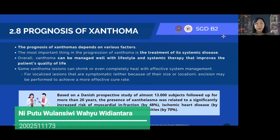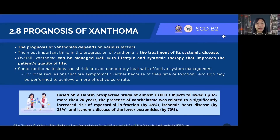Hello everyone. My name is Tipu Talansiwedantara, with my last three digit number being 173. In this session, I will explain about the prognosis of Xanthoma. The prognosis of Xanthoma depends on various factors. When trying to cure Xanthoma, the most important thing is the treatment of its systemic disease. Therefore, Xanthoma can be managed well with lifestyle modification and systemic therapy, which can improve the patient's quality of life. Generally, Xanthoma lesions can be completely healed with effective systemic management, but in some cases excision may be needed to achieve a more effective cure.